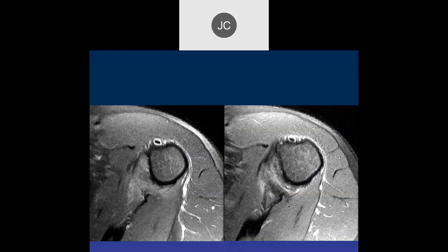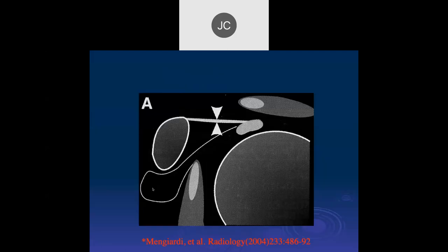On axial slices we see capsular edema at the middle and inferior glenohumeral ligaments. We're really in the inferior recess area, and there's a lot of edema around the inferior capsule — pretty severe capsular edema. Most of the time we don't see it quite that severe. Other findings we look for include the rotator cuff interval.